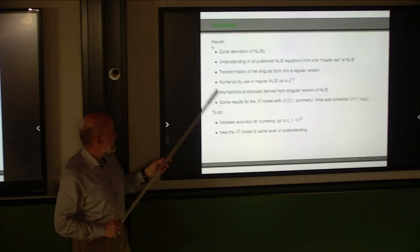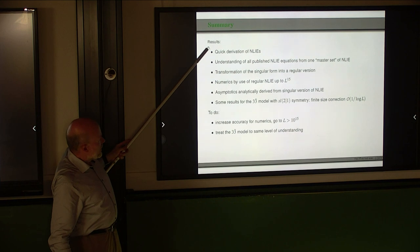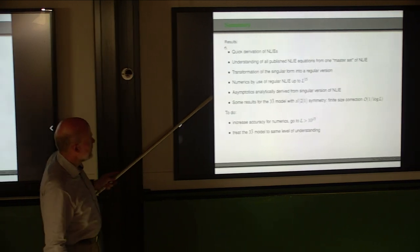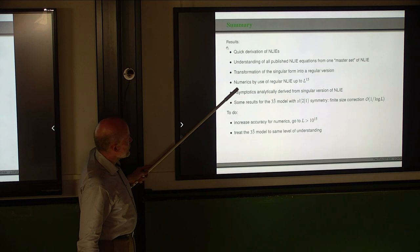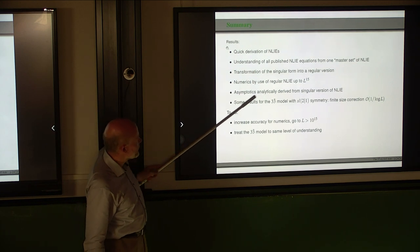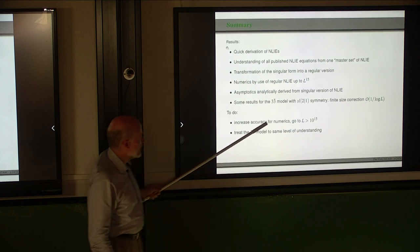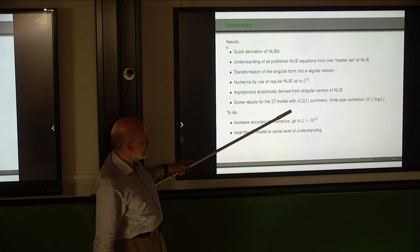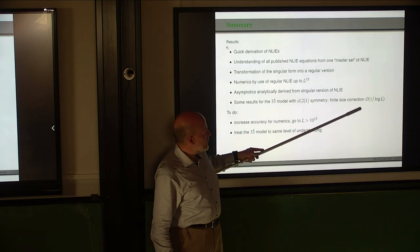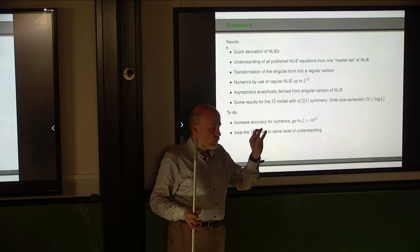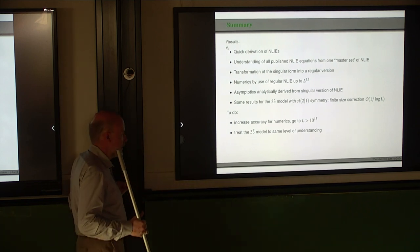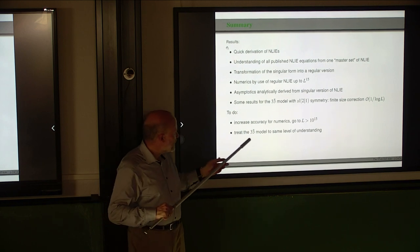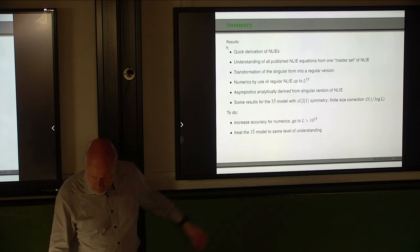One result we obtained for the three-bar model: the leading finite size corrections are indeed of order 1/log L, which was not so clear from the numerics. In summary: I showed a quick derivation of the nonlinear integral equations. We now have an understanding of all the nonlinear integral equations in the literature. The transformation to a regular version was possible and has been used for numerics. Asymptotics are obtained analytically from the singular version. For the three-bar model with SL(2|1) symmetry, we identified the 1/log L leading corrections.